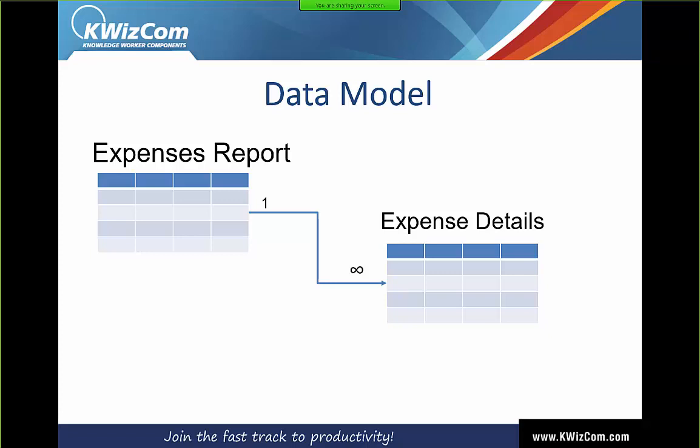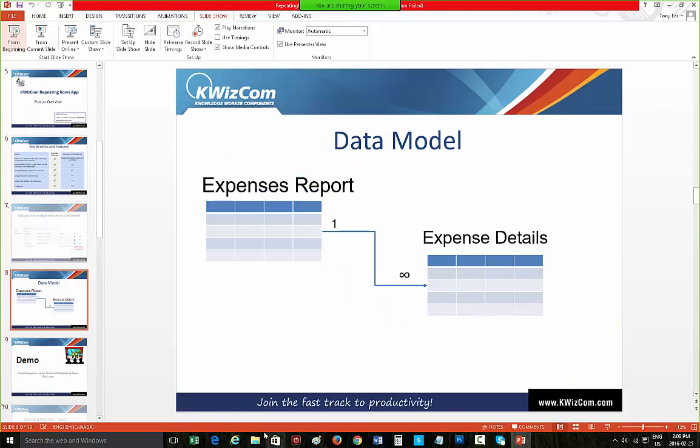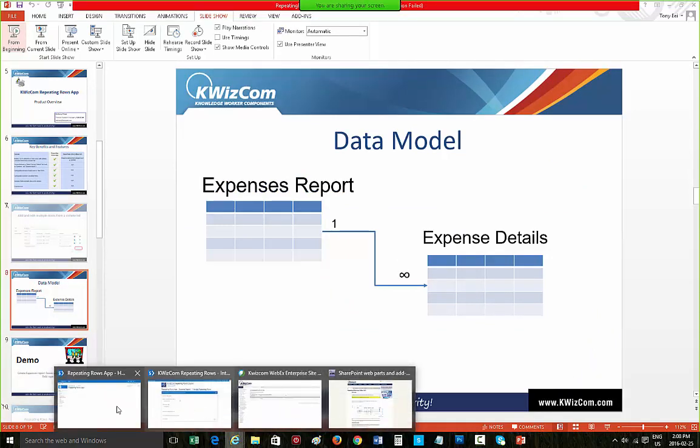Before I begin my demo, here's a data model diagram of how Repeating Rows works. Before you create a Repeating Rows column, you need to have your connected lists — a master list and a detail list — created and connected together. For this example, I have an expense report list and an expense detail list. The expense report can have many expense detail items. The expense report list has the report title and expense details, and the expense details list has fields such as date, amount, and expense type. Here's how the actual report looks, connected to the expense details.